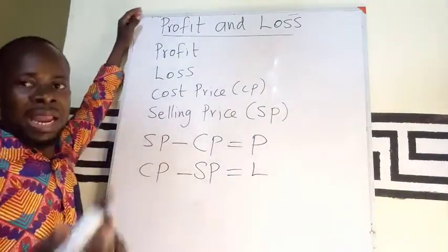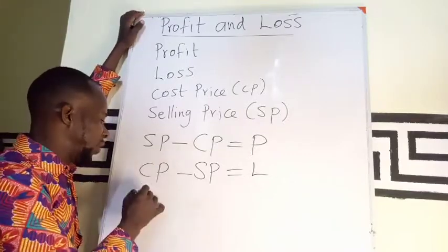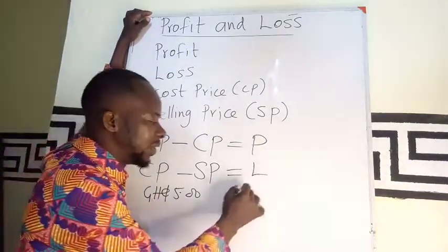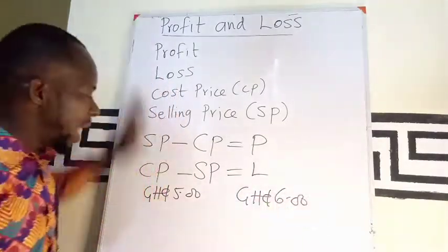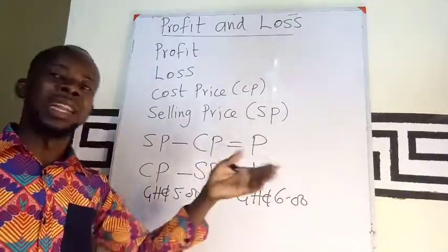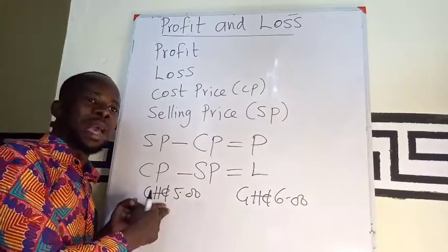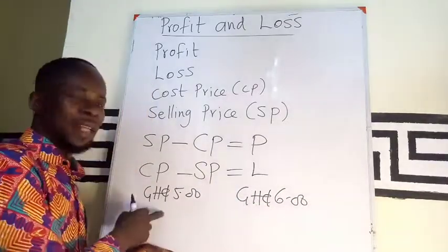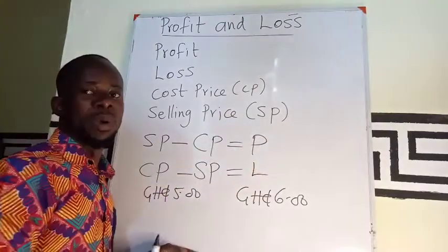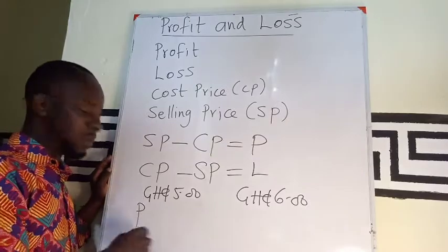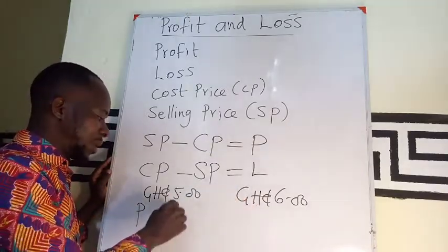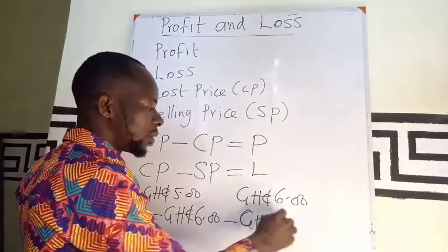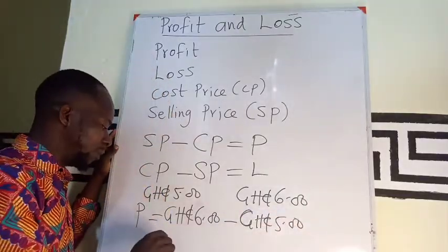For example, you buy an article — let's say a pen — at 5 Ghana cedis. Then you decided to sell that pen at 6 Ghana cedis. You buy it at five and sell it at a different price, so you either gain or lose. With cost price being 5 cedis and selling price being 6 cedis, the selling price is greater than the cost price, which means I am having a profit. The profit I am making is selling price minus cost price: 6 Ghana cedis minus 5 Ghana cedis, so the profit is 1 Ghana cedi.